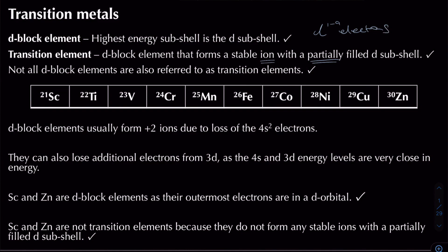Not all d-block elements can be referred to as transition metals. The ions they form determines whether it's a transition metal or not. Most d-block elements form 2+ ions because they lose two electrons from the 4s subshell.